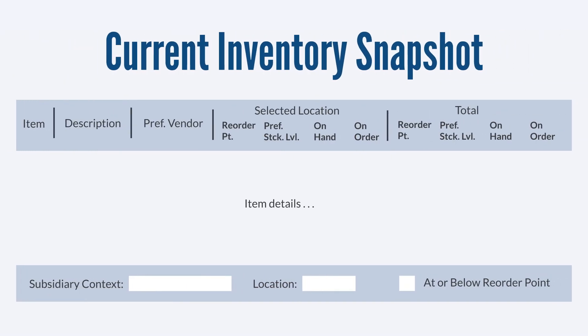The Current Inventory Snapshot report does exactly what it says — it simply provides a snapshot of your existing inventory levels. As an added bonus, it also helps you with reordering items by showing the reorder points for your items and their preferred stock levels. You can easily filter the report to display items that are at or below their reorder points, which will keep you from overstocking or understocking your items.